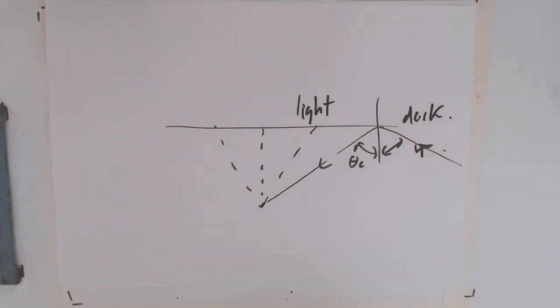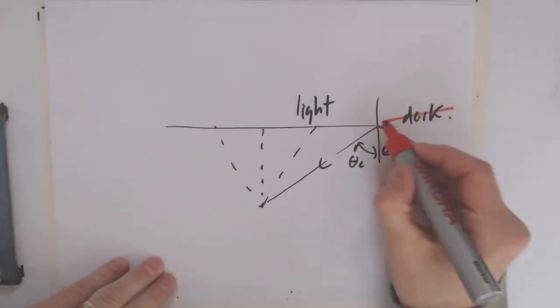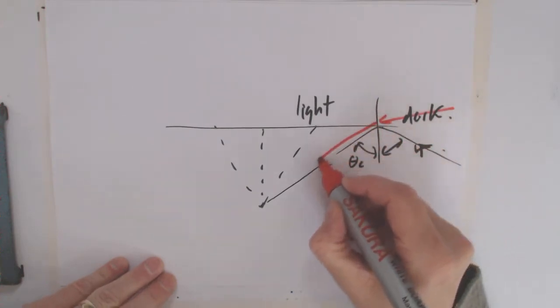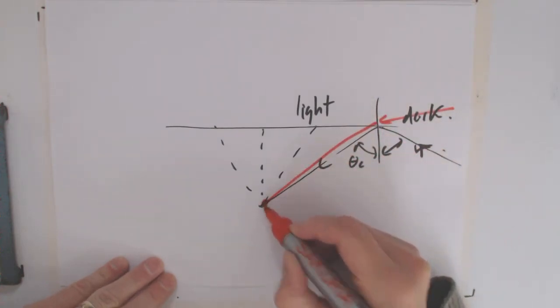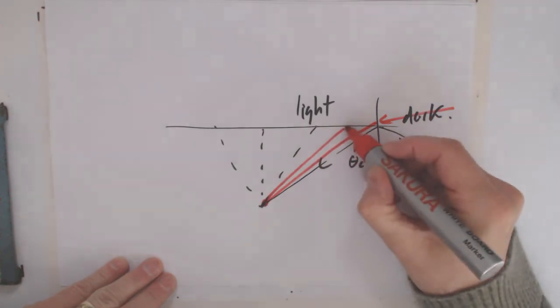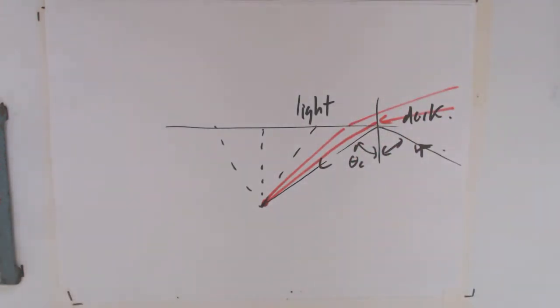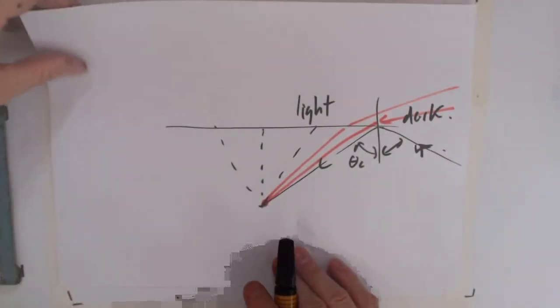Everything also gets a bit distorted because basically even stuff over here can get to you. So up there, you can see stuff over here, but as soon as you look over there, you see the bottom. So you get this circle of light.